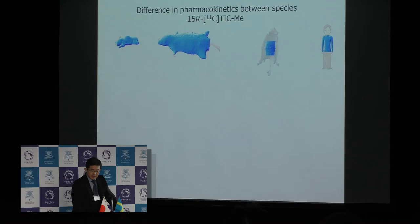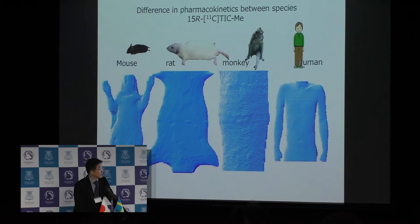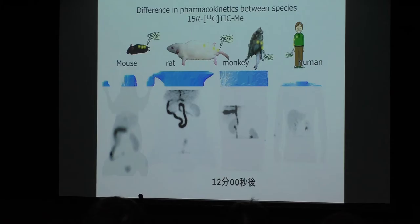In some drugs, you see that pharmacokinetics quite differs between humans and animals. When we inject intravenously the same compound in mice, rat, monkey, and human, you will see differences in drug pharmacokinetics among species.